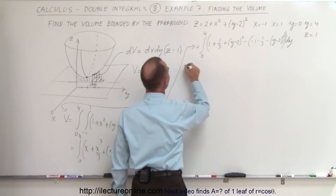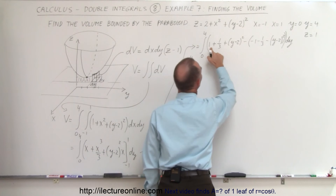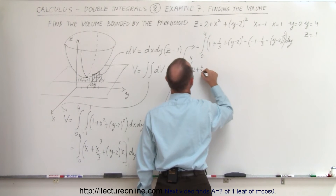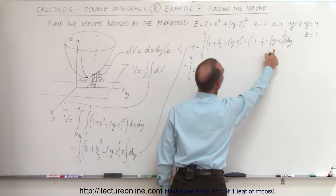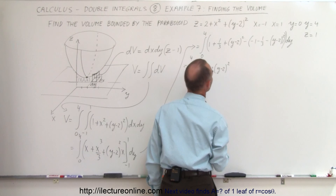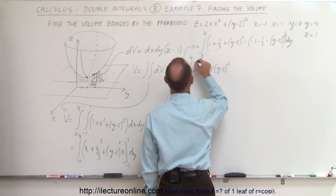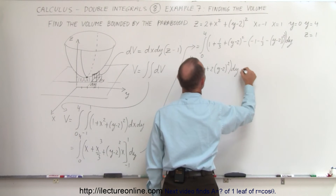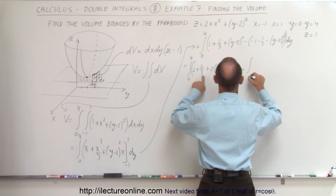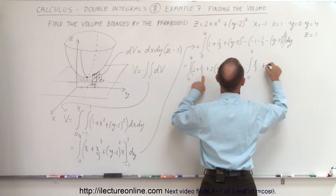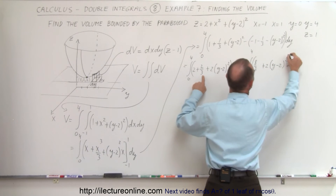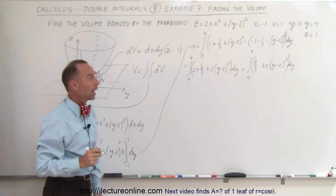Cleaning up: 1 plus 1 is 2, and 1 third plus 1 third is 2 thirds, so 2 plus 2 thirds equals 8 thirds. For the y minus 2 squared terms, we have 2 times the quantity y minus 2 squared. So the integral simplifies to the integral from 0 to 4 of 8 thirds plus 2 times the quantity y minus 2 squared dy.